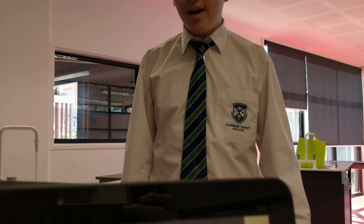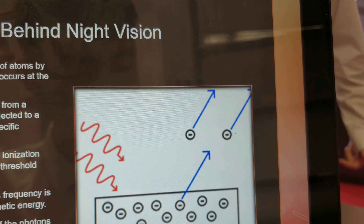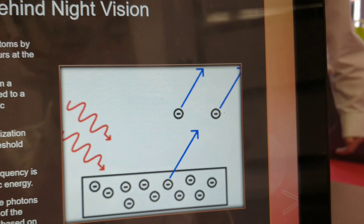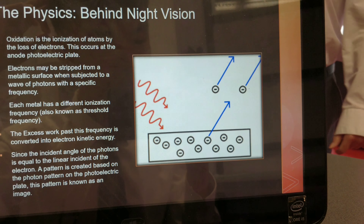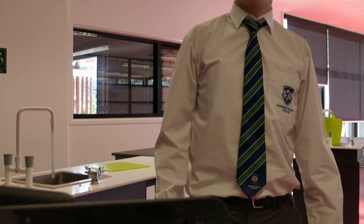is equal to the linear incident of the electron, a pattern is created based on the photon pattern on the photoelectric plate. This pattern is known as the image, and is what we see in night vision goggles.